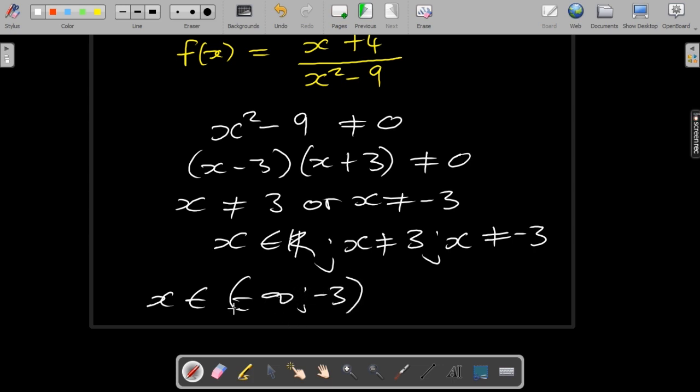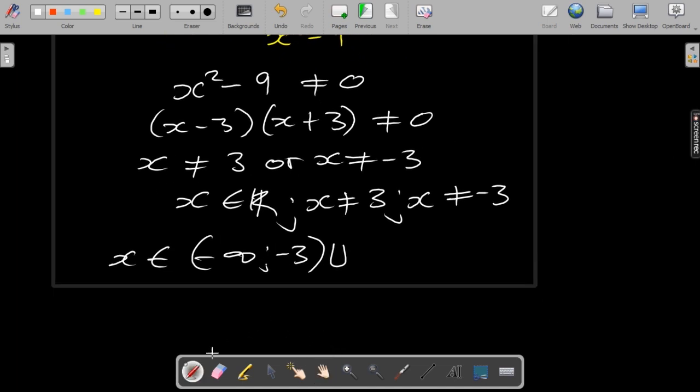so all the way to the left until -3, your function is defined. Then at -3 it is not defined—there is a break—and you're going to indicate that by showing the union.